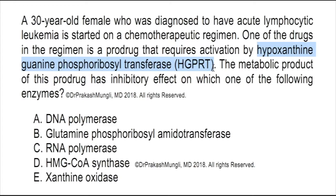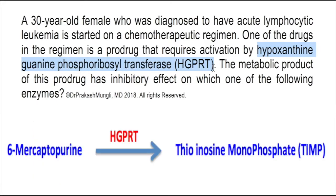The pro-drug used in acute lymphocytic leukemia that requires hypoxanthine guanine phosphoribosyltransferase is 6-mercaptopurine. 6-Mercaptopurine competes with purines like guanine or purine derivatives like hypoxanthine for the HGPRT enzyme. When 6-mercaptopurine binds to HGPRT, it is converted into TIMP — thioinosine monophosphate.